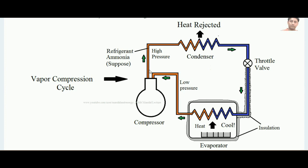By increasing the pressure, a squeezing or wringing action happens on the refrigerant — same as with the wipe. When the wipe is squeezed, the water content comes out. Similarly, when the squeezed or pressurized refrigerant passes through the condenser, that is where it rejects the heat to the surrounding. Again, when it passes through the throttle valve, the pressure is reduced — same as untwisting the wipe after wringing — so it can absorb more water.